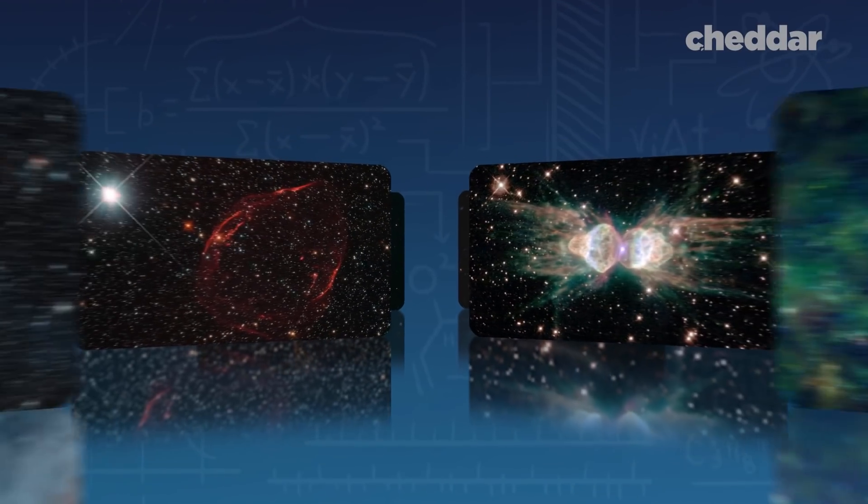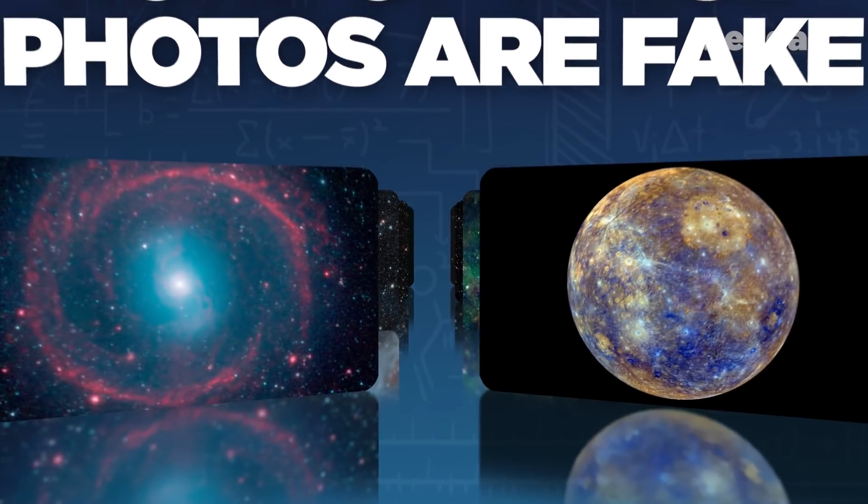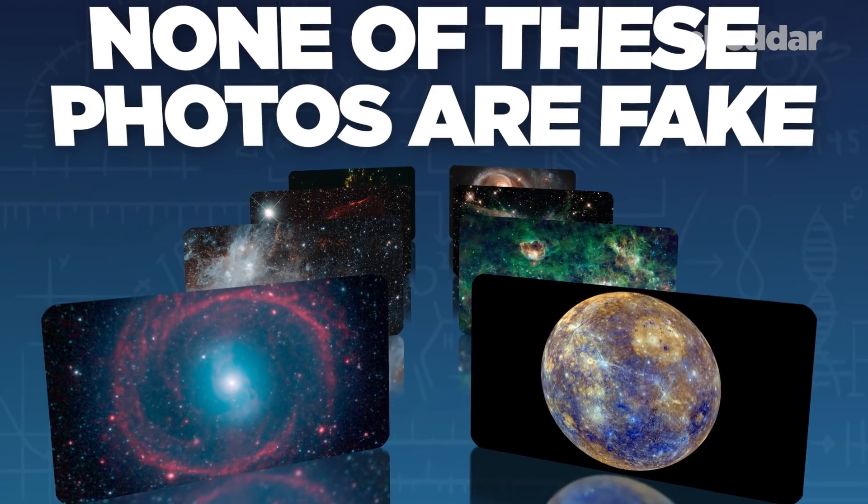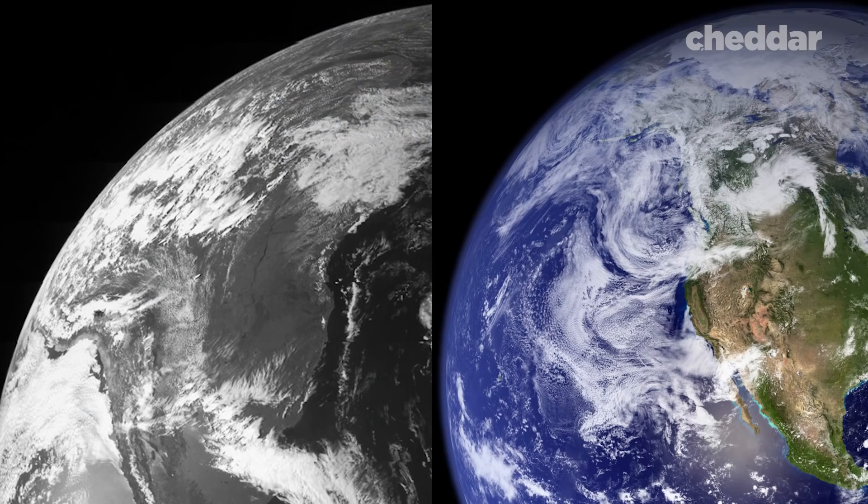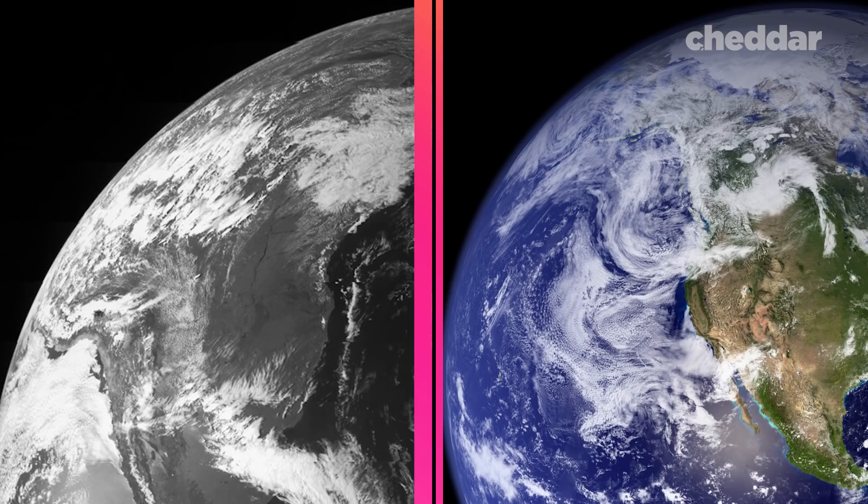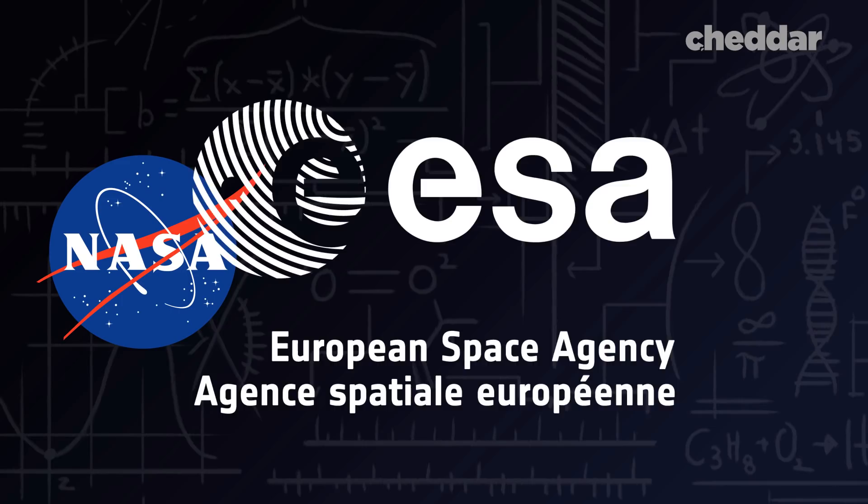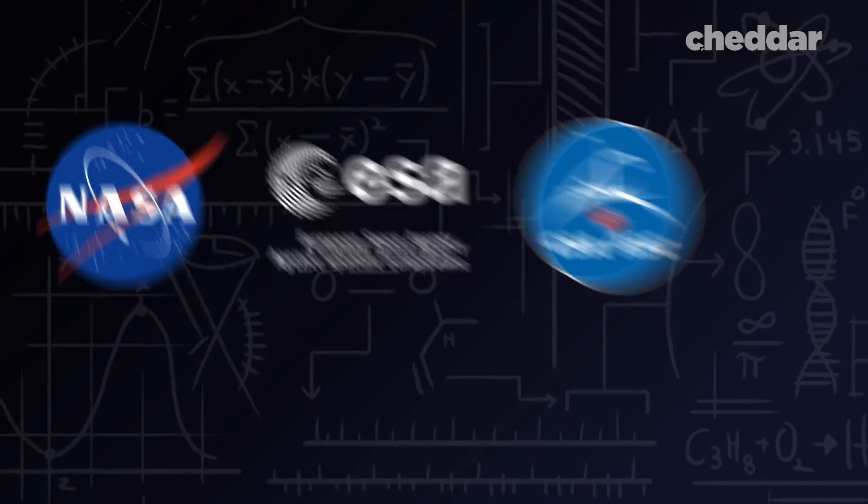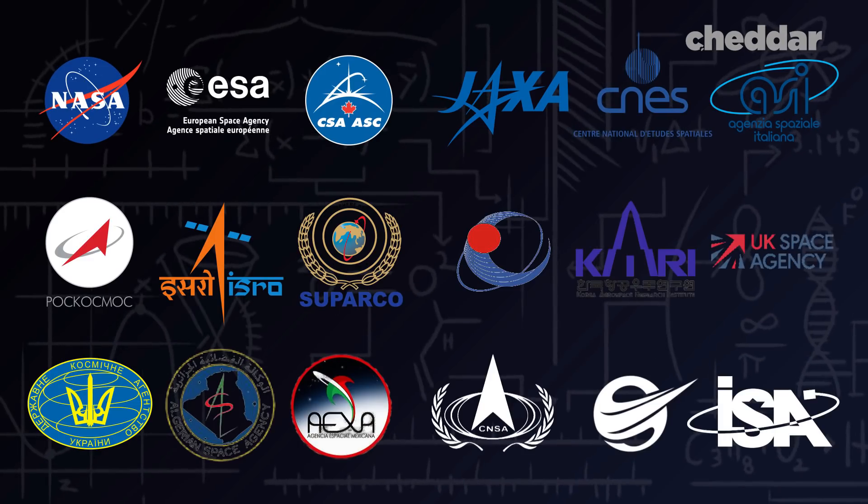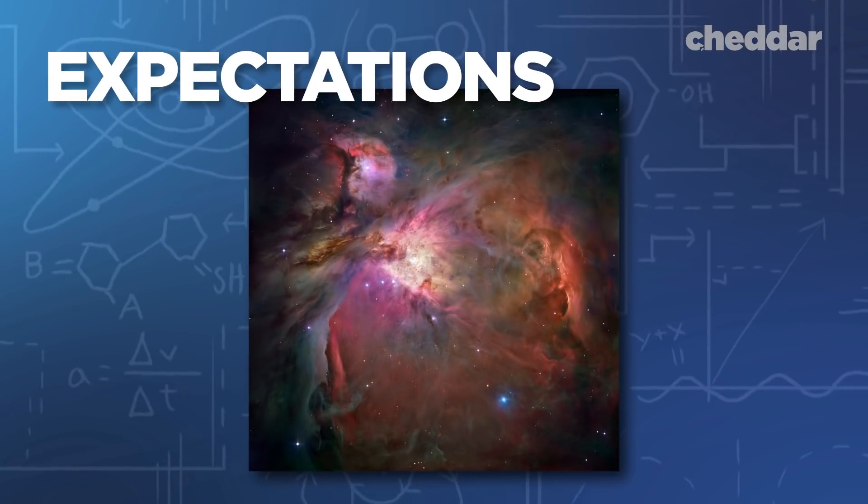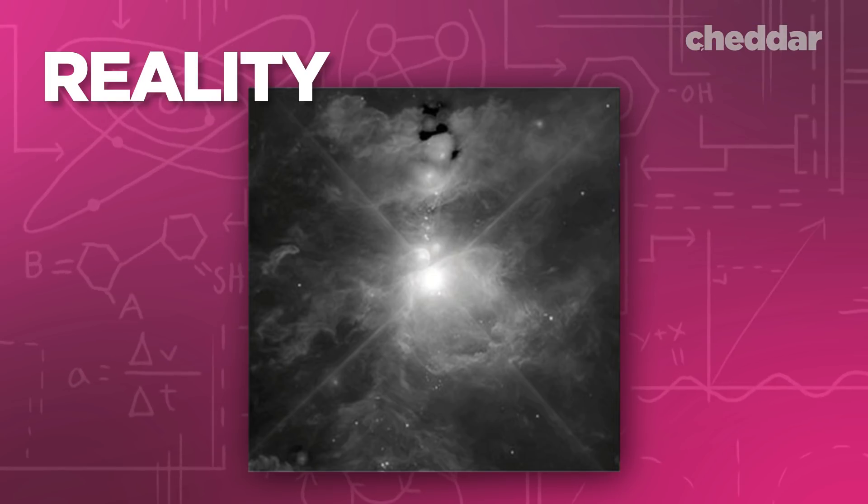The most important thing to get out of the way here is that none of these photos are fake. According to the space agencies that took them, they're just interpretations of our reality. These interpretations, however, are edited as NASA, the ESA, the Canadian Space Agency, and most, if not all, other space agencies photoshop the images they take of the universe around us.